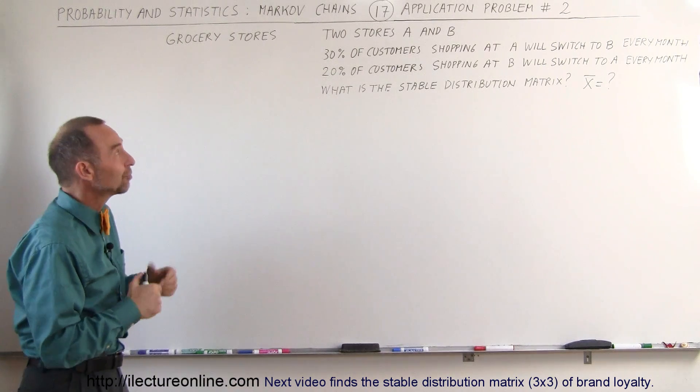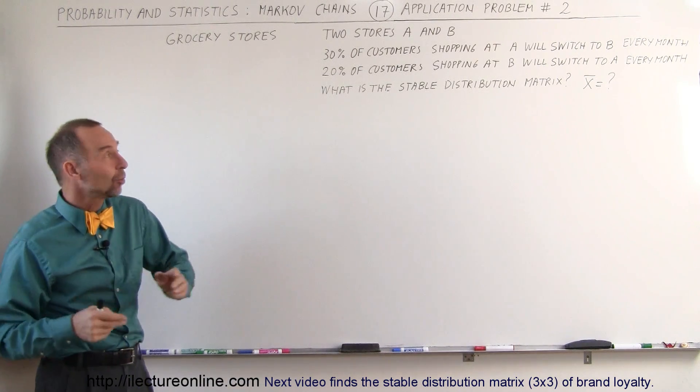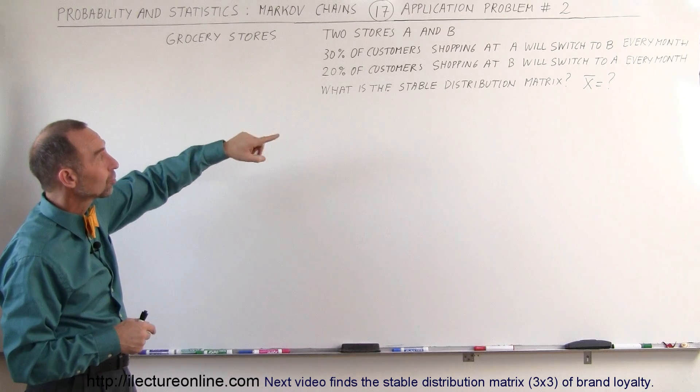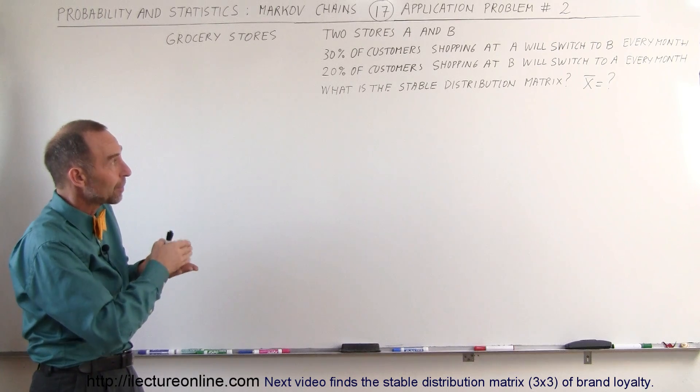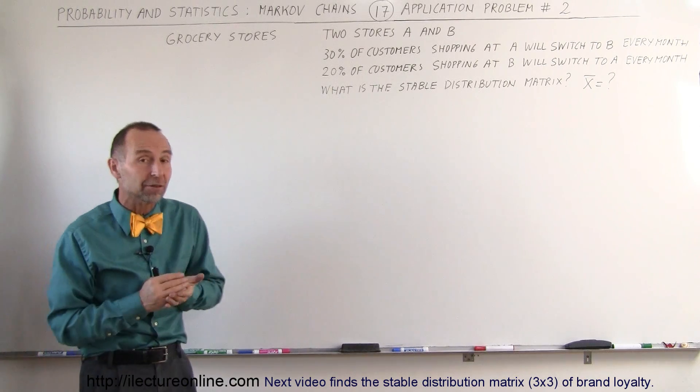In this example, we have two stores A and B. We see that 30% of the customers currently shopping at A will switch to B every month, and 20% of the customers shopping at B will switch back to A every month.